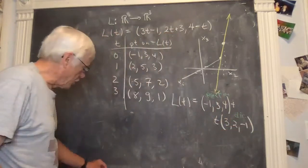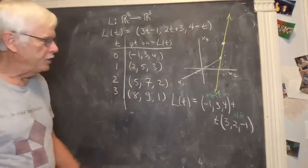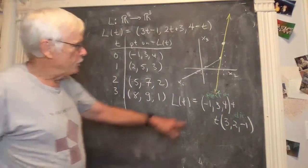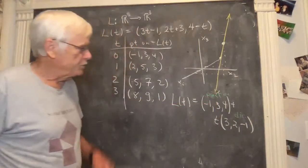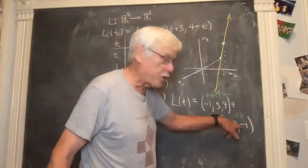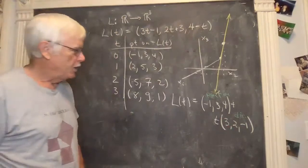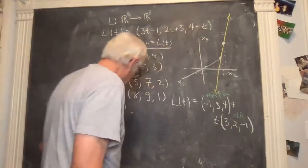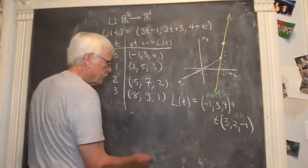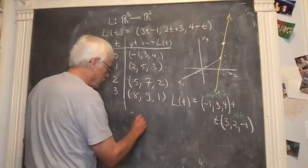So to get another parametric equation for the exact same line, you want to use maybe different points that are on, and you can use different directions, but they have to be parallel to this, so that means multiples of them. And so we got plenty of information here, so let's do it.